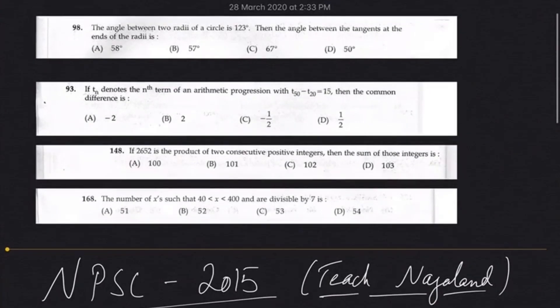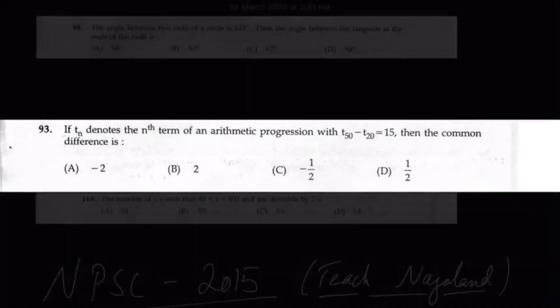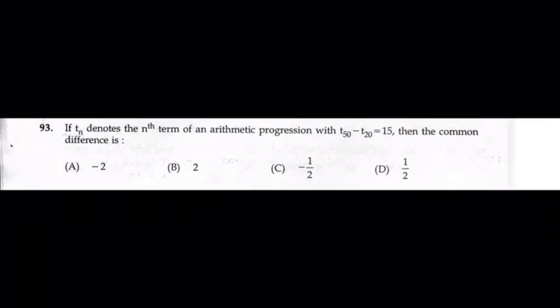Moving on to the next question, question number 93. If t_n denotes the nth term of the arithmetic progression, and when you subtract the 50th and the 20th term, we get the difference as 15, find the common difference.